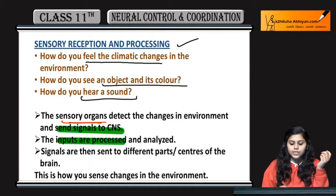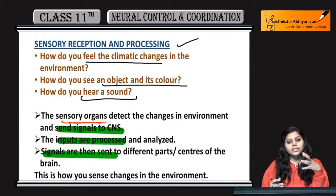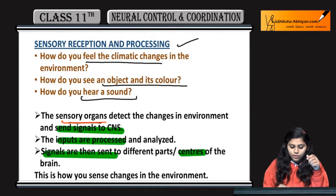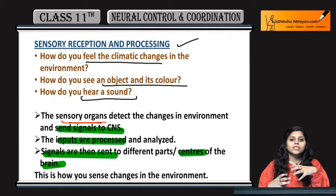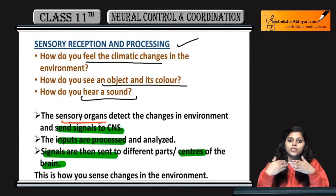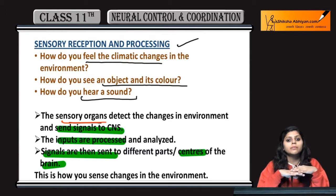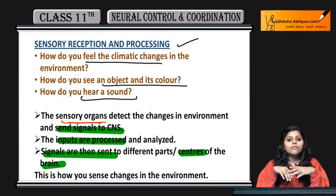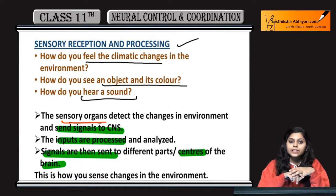Inputs processing and analyzation: signals are then sent to different parts of the center of the brain. We sense changes in our environment, we see color changes, and we listen to someone's voice. Further, we will study the eye and ear.